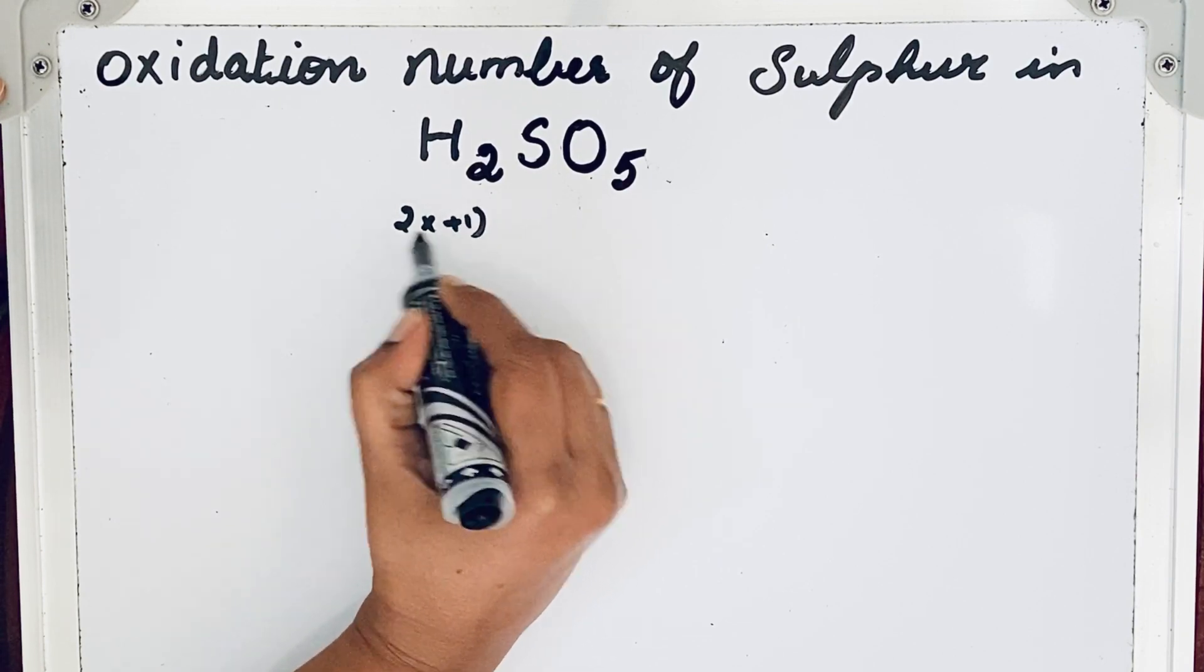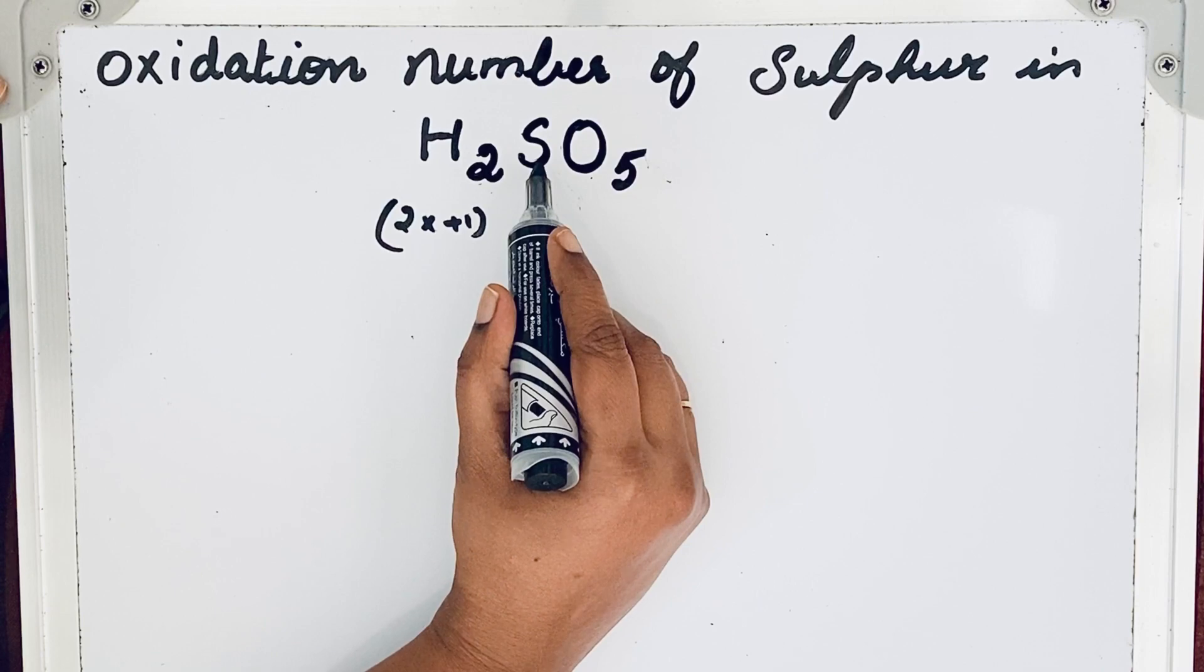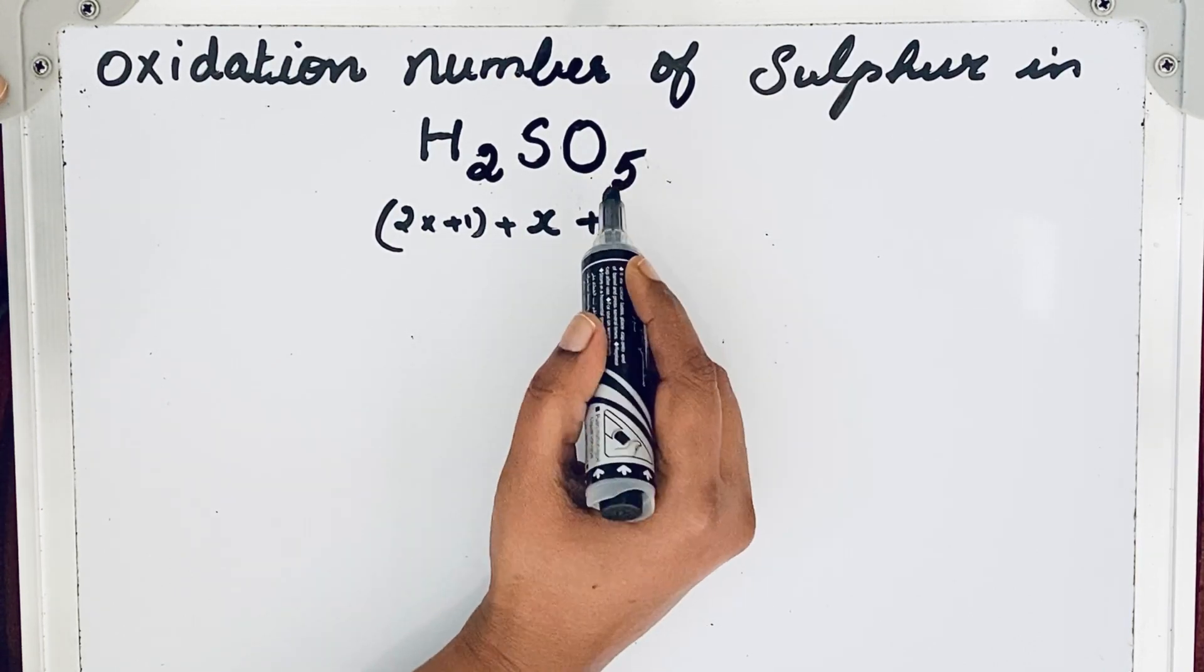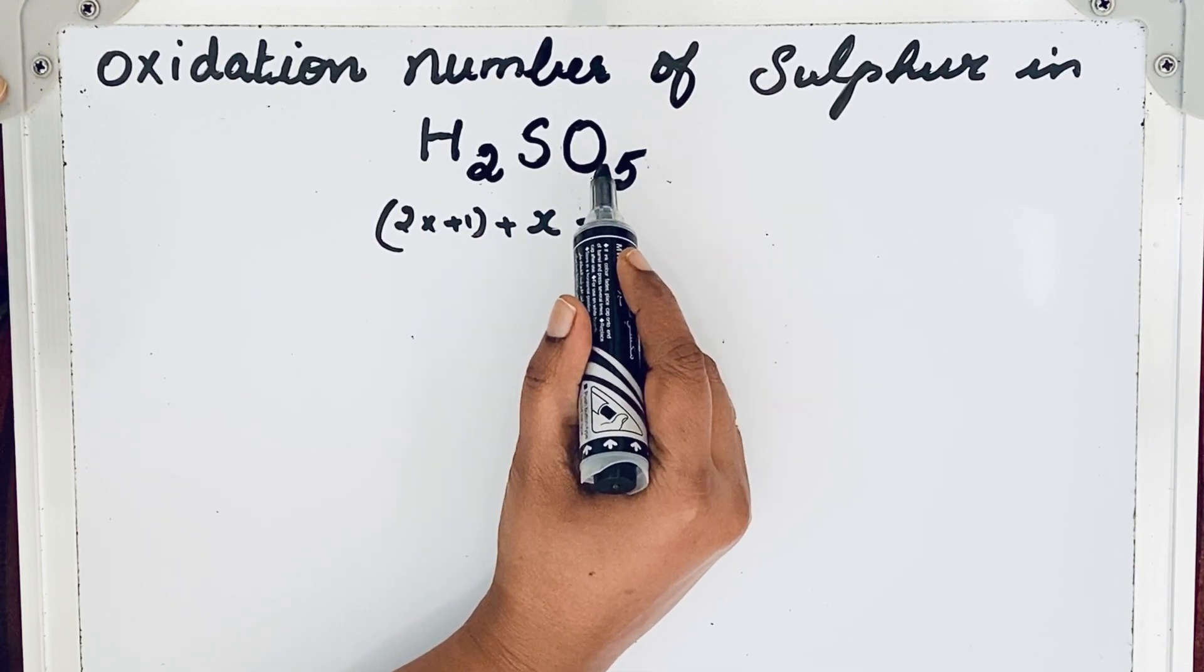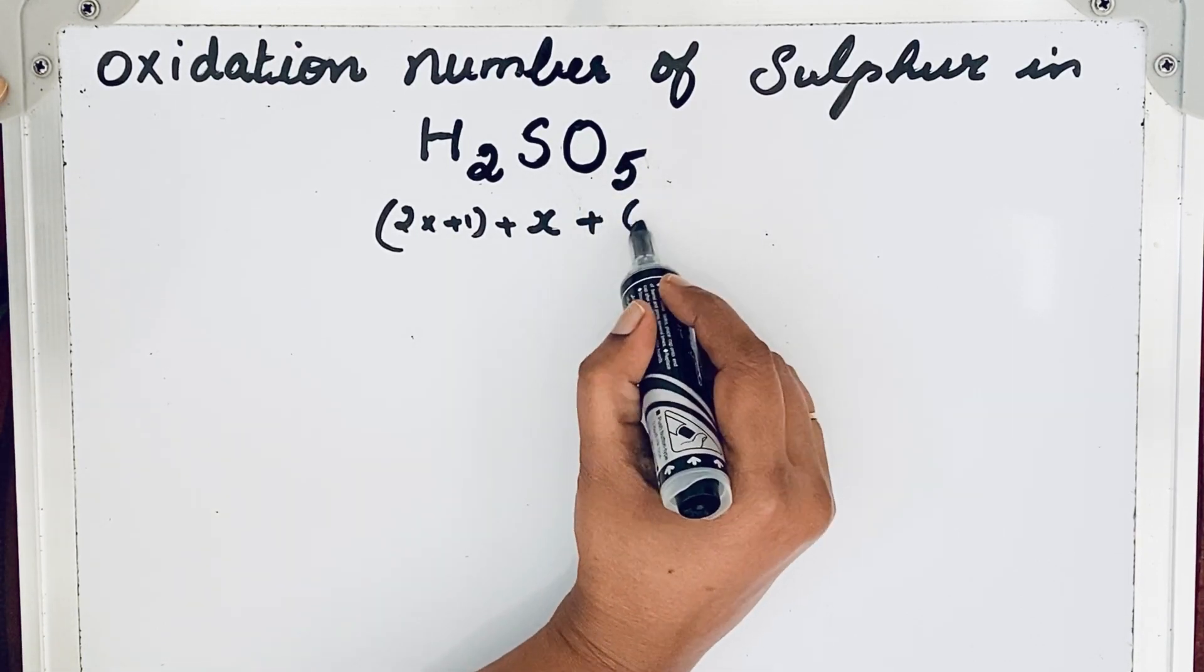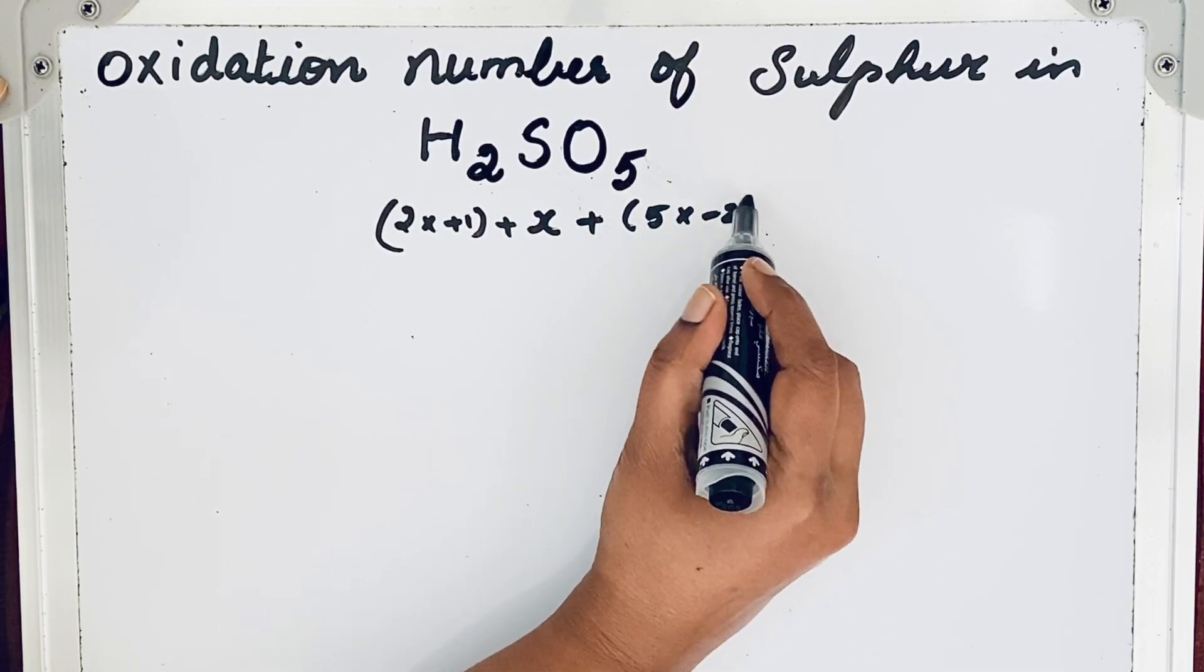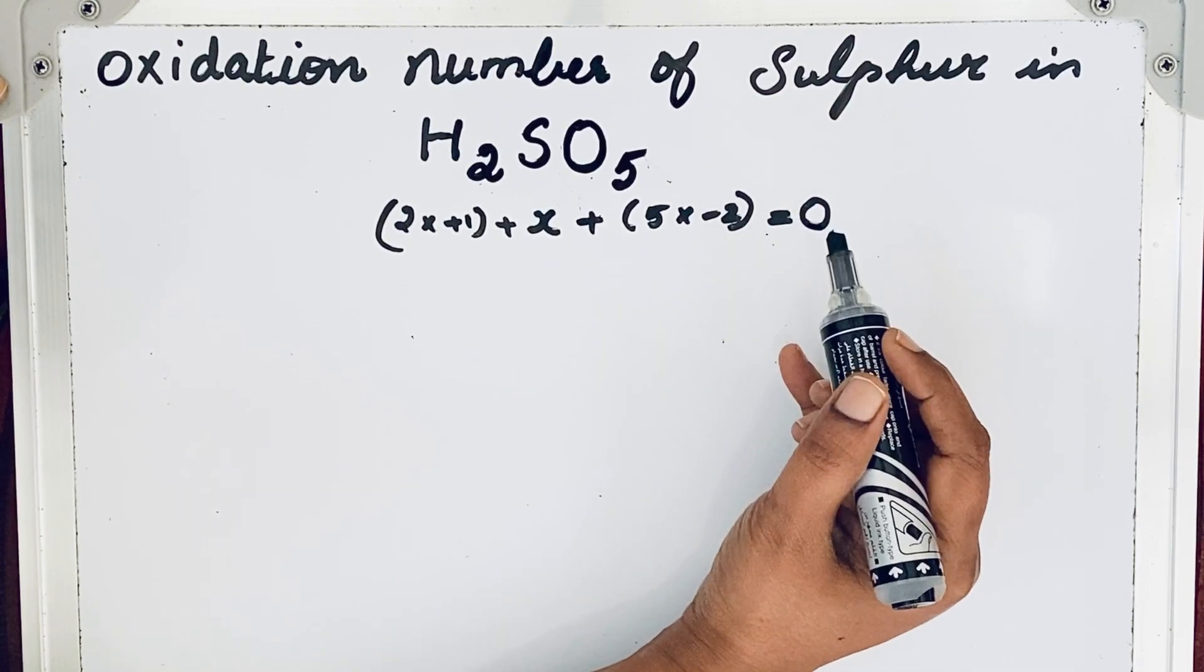Multiplied by plus 1. Sulfur we are going to find, so let us keep it like x. Then oxygen, except peroxide and superoxide, in all other compounds oxidation number of oxygen is minus 2. So here there are 5 oxygen atoms, so 5 multiplied by minus 2. That is equal to 0 because algebraic sum of all the atoms in a compound, in a neutral compound, should be 0.